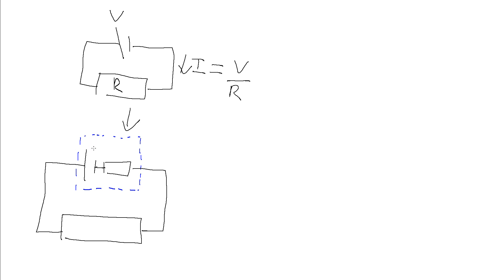We're going to identify these with a couple of symbols and also label the load resistance. The EMF we label as ε, the internal resistance as lowercase r, and the external resistance as uppercase R. So lowercase r for the internal resistance — the resistance of the materials that make up the cell — plus uppercase R for the resistance of the external circuit. Because these two resistors are in series, the total resistance is just R plus r.